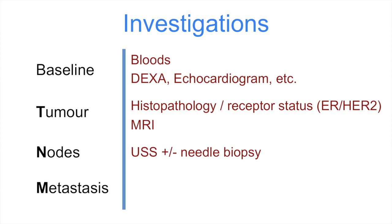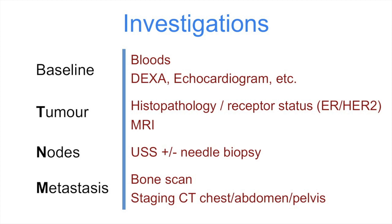Finally, when it comes to looking for metastatic disease, the tests we performed earlier may give us a clue to the presence of liver metastases if the liver function is abnormal, or bone metastases if the calcium and alkaline phosphatase are raised. If we suspect bone metastases, a bone isotope scan may be performed in addition to a staging CT of the chest and abdomen.